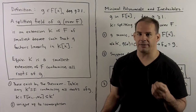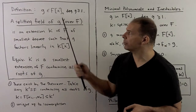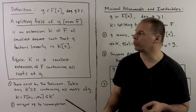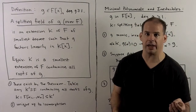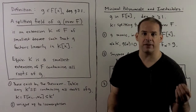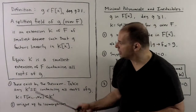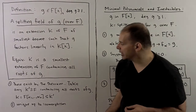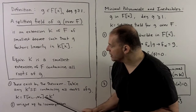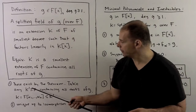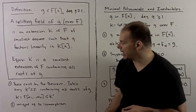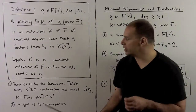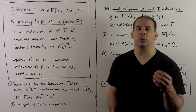With the theorem, we have the following definition. We pick a non-constant polynomial g with coefficients in f. We define a splitting field of g over f to be an extension k of f of smallest degree such that g factors linearly in k[x]. Equivalently, k is the smallest extension of f containing all the roots of g. These exist by the theorem. We pick any extension k' of f containing all the roots of g; then our splitting field is just f adjoin α₁ through αₙ, where the αs are the roots of g in k'. The splitting field depends on k', but all splitting fields are isomorphic to one another — unique up to isomorphism — so we sometimes refer to the splitting field.